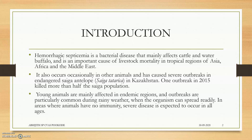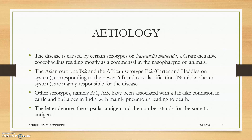Hemorrhagic septicemia is a bacterial disease that mainly affects cattle and water buffaloes — they are the main hosts. Young animals also get affected, and one outbreak in 2015 killed more than half of the saiga population in Kazakhstan, showing that wild animals also get affected. And if proper treatment is not given in time, death is for sure.